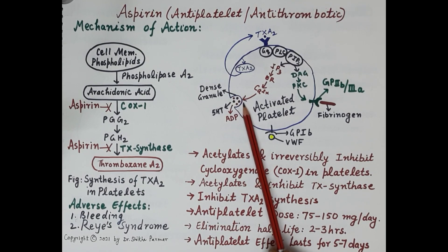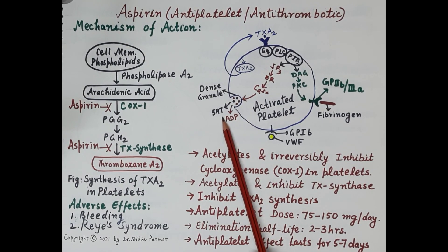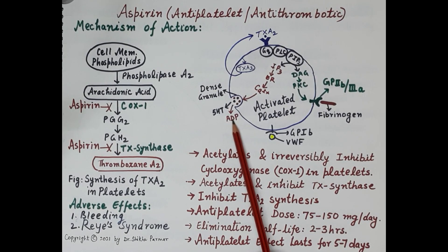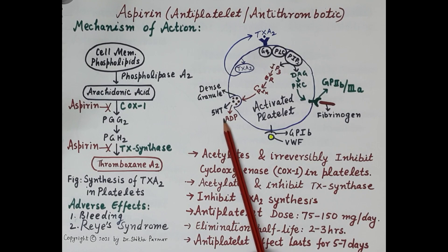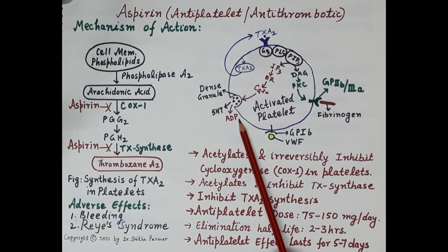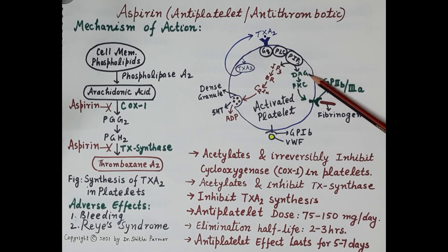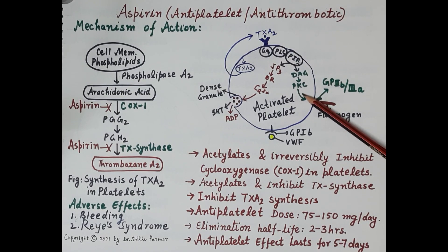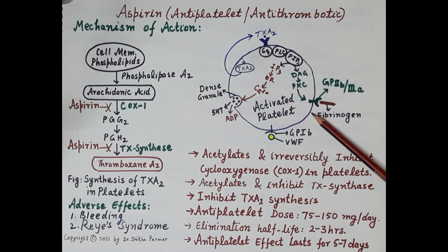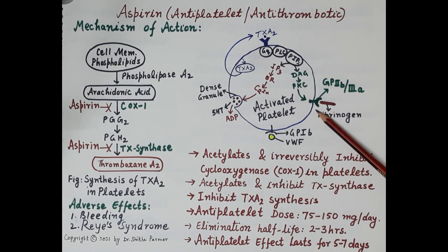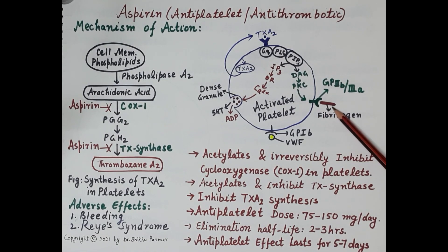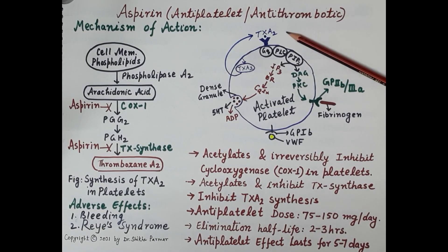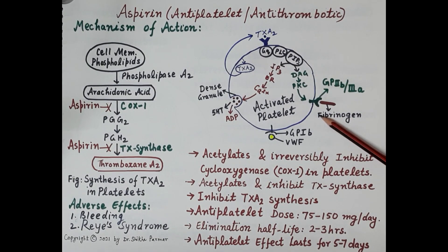Degranulation of these granules results in further release of 5-hydroxytryptamine and ADP — important mediators of platelet aggregation. Additionally, DAG stimulates protein kinase C, which further activates GP2b3a fibrinogen receptors, inducing cross-linking with other platelets. Fibrinogen acts as a glue. This is how thromboxane A2 synthesis drives platelet aggregation.